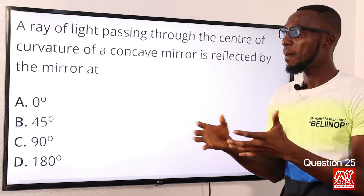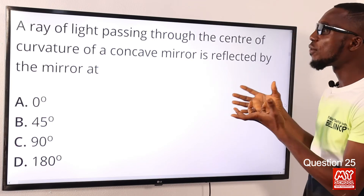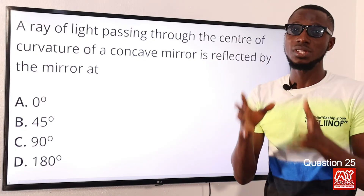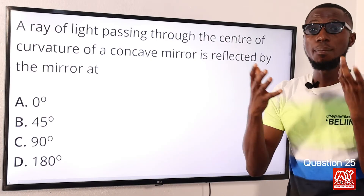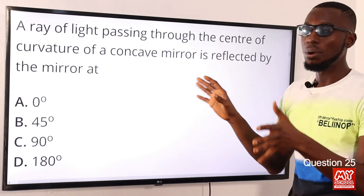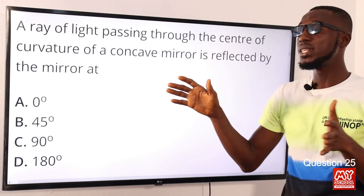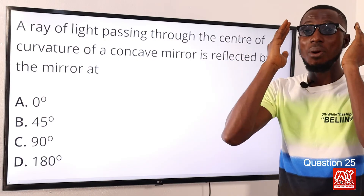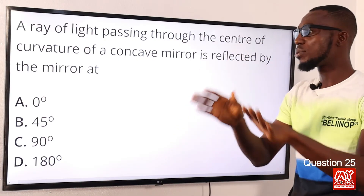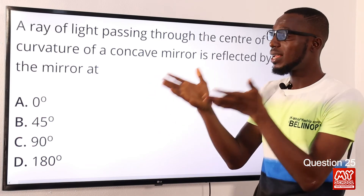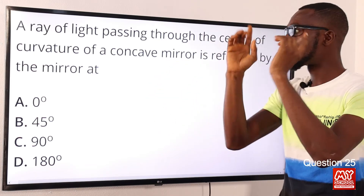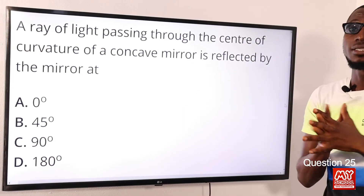Question 25: A ray of light passing through the center of curvature of a concave mirror is reflected at what angle? The center of curvature is the center of the sphere of which the mirror forms a part. At the center of curvature, the light is reflected back along the same path. This means the angle is zero degrees. Option A — zero degrees — is the correct option.